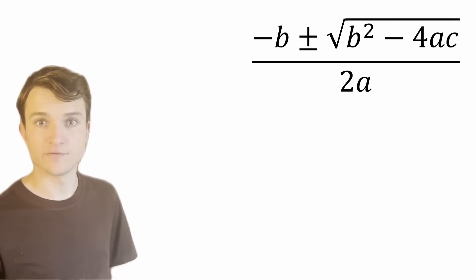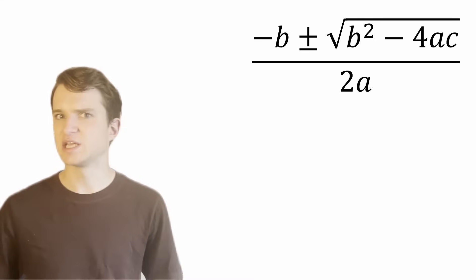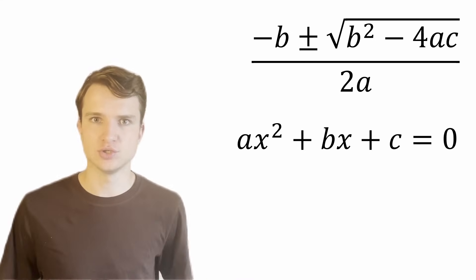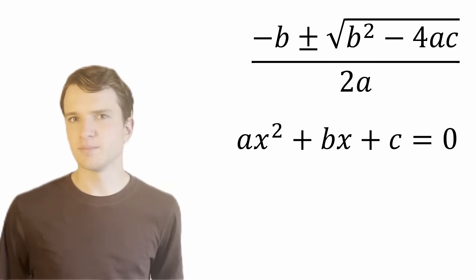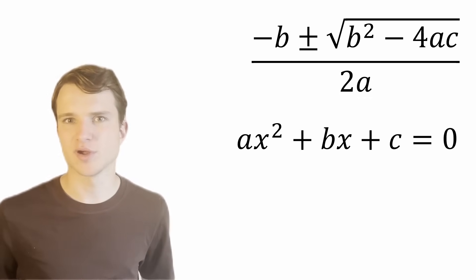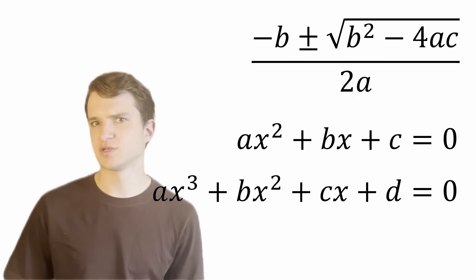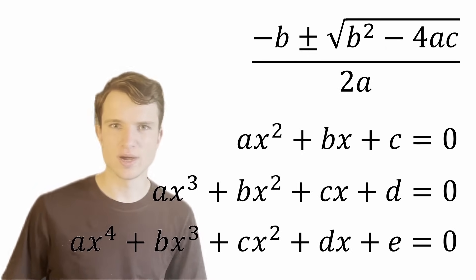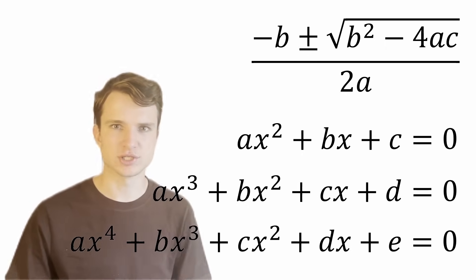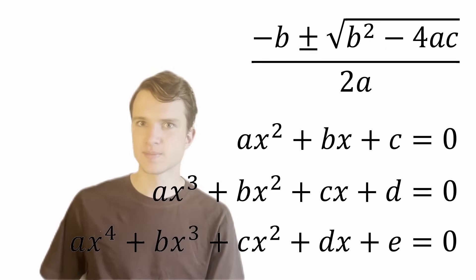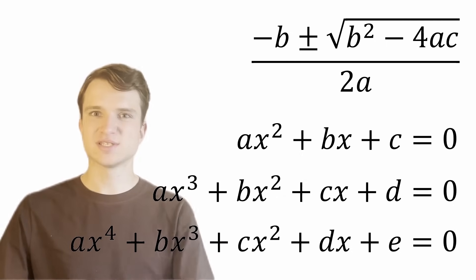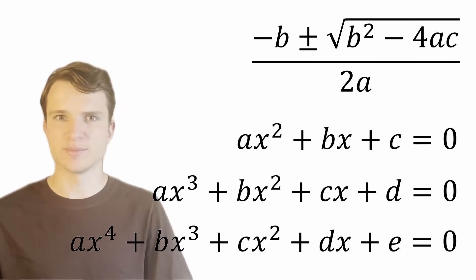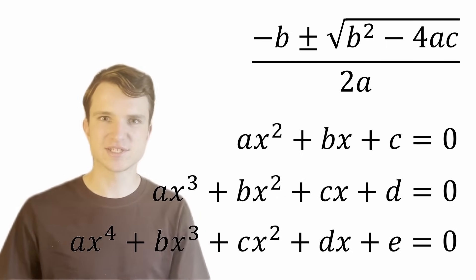We're all familiar with the quadratic formula. I give you any quadratic equation, you put the coefficients in, and it gives you your two solutions back out again. But what if I gave you a random cubic equation or a random quartic equation? Would you be able to tell me the solutions? Well, unless it's a particularly nice one where the solutions are obvious, you probably wouldn't be. But it is actually always possible to find solutions, and I'll be showing you how to do this in this video.